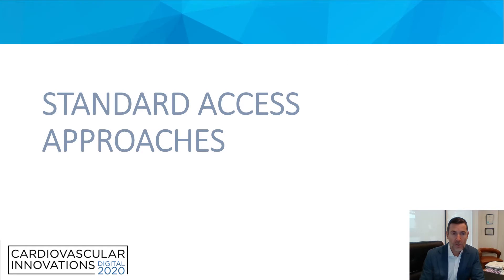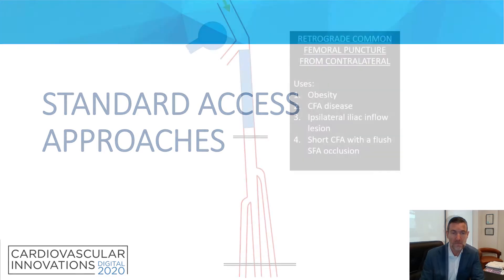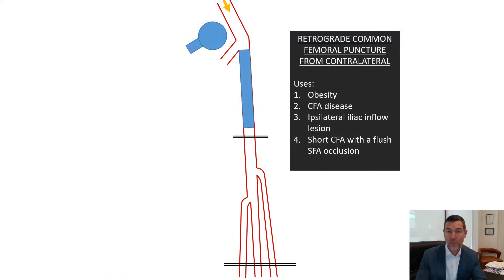For the rest of my talk, in the interest of time, I'm going to focus on access approaches to cross femoropopliteal CTOs. I use an up-and-over approach in only very few patients: those with obesity, those requiring treatment of a common femoral artery or ipsilateral iliac inflow lesion at the same time, or those with a short common femoral artery and a flush SFA occlusion.